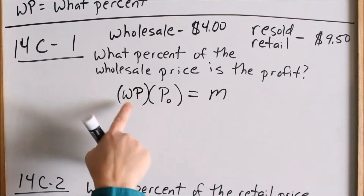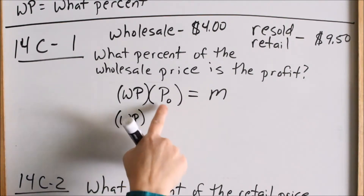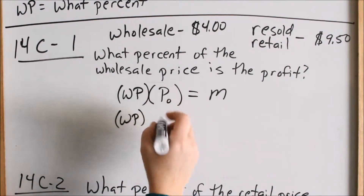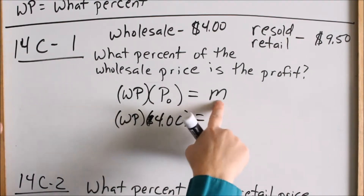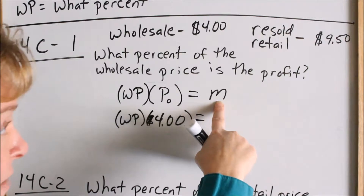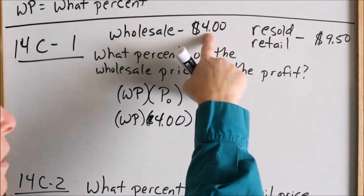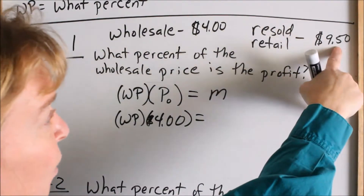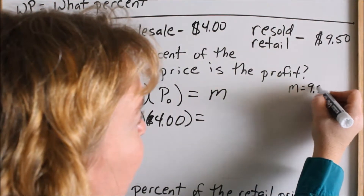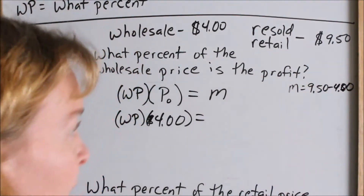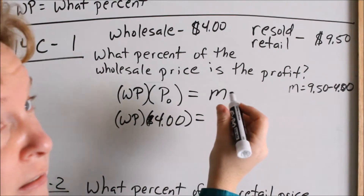Now let's plug in what we know. The wholesale price, our original price, is $4. We weren't told the profit directly, but we can figure it out: one of our equations says markup equals final price minus original price. So the markup is $9.50 minus $4.00, which is $5.50. That's how much the warehouse makes on every CD it sells.